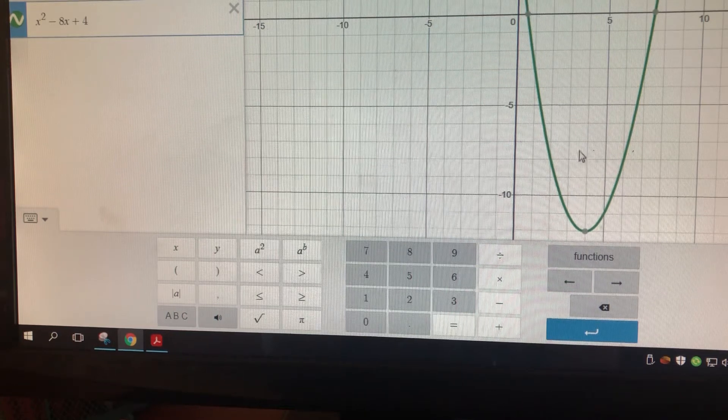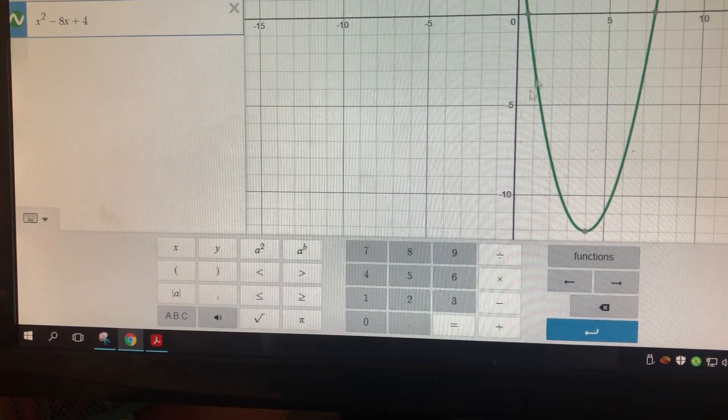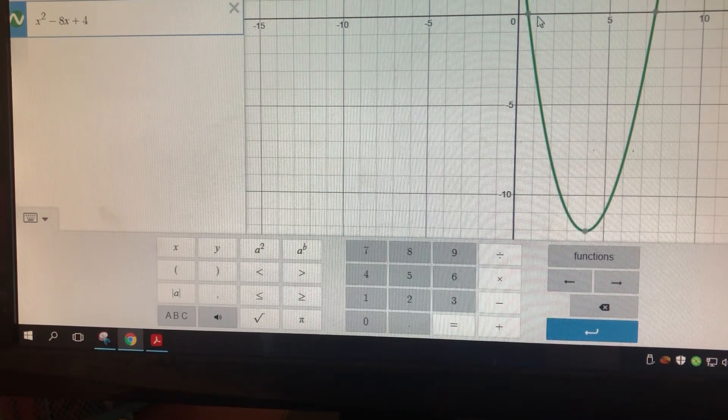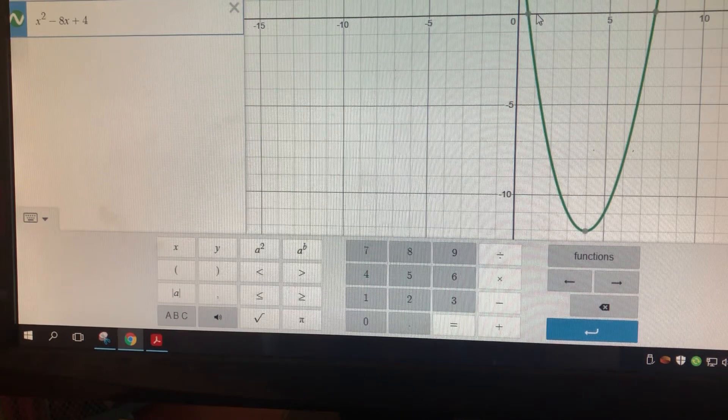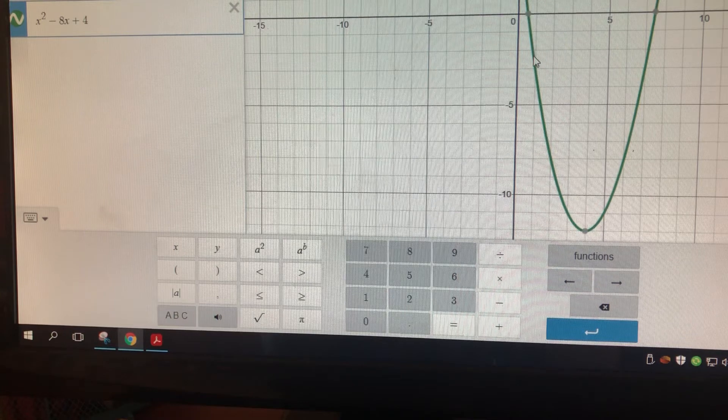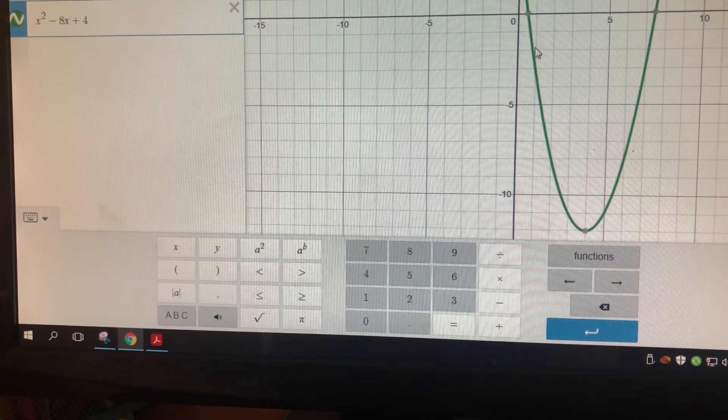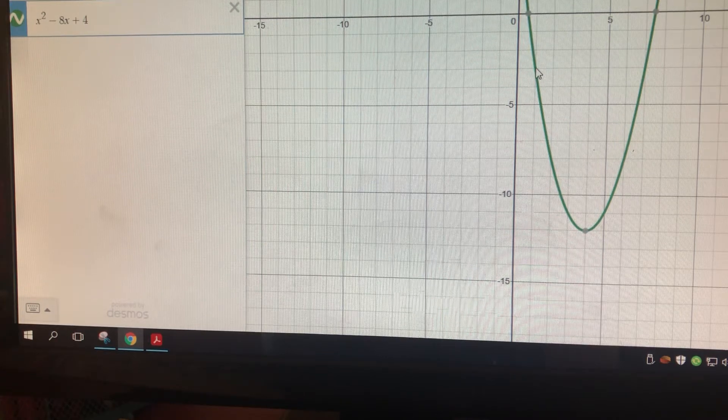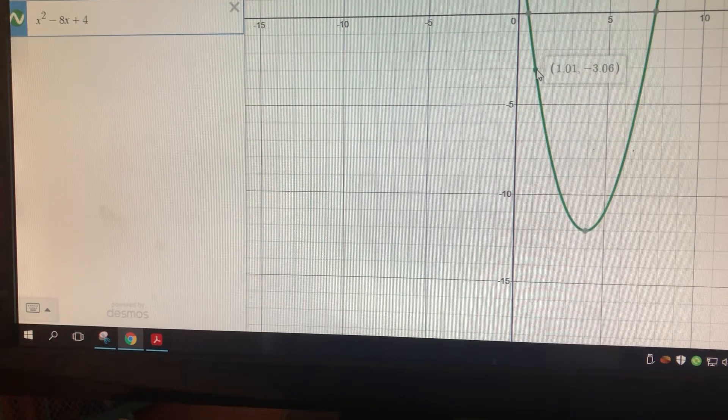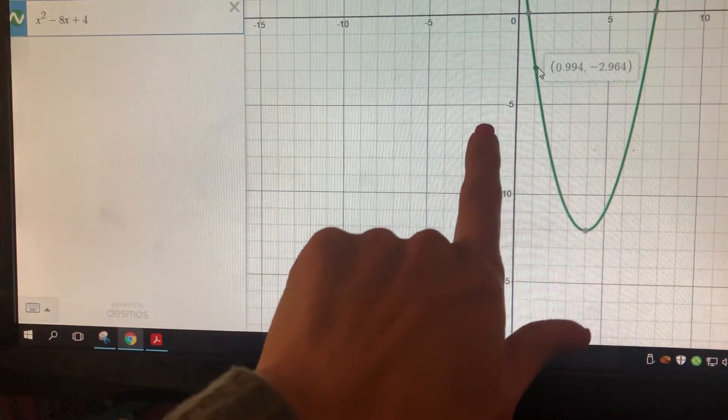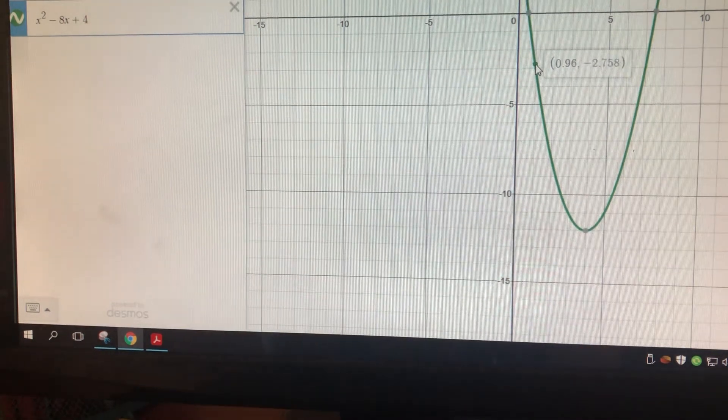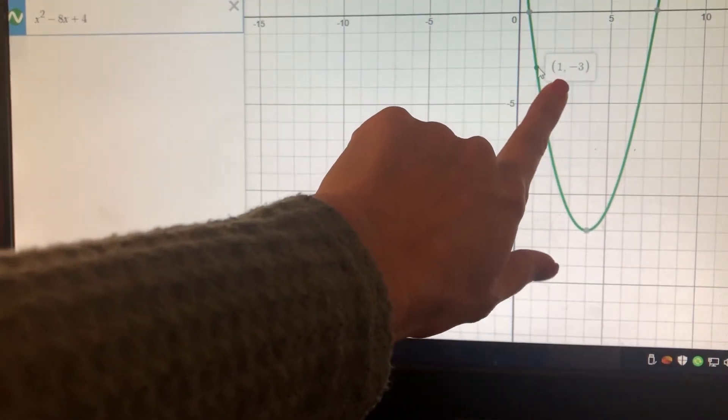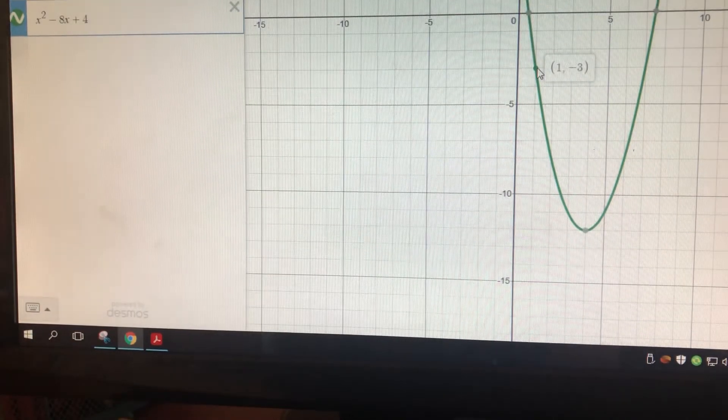And then I'm finding the average rate of change from x1 at 1 to x2 at 3. So 1 is right here, x equals 1 is right here. Then I'm going to follow it down to the graph to see where it hits on the graph, and I'm going to just kind of finagle it a little bit until I see. There we go. So when x is 1, y is negative 3. So that's my first pair, 1 negative 3. So I'm going to write that down on my paper.